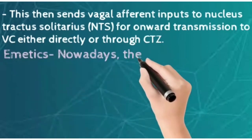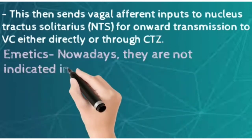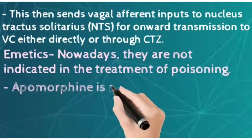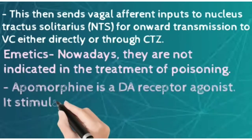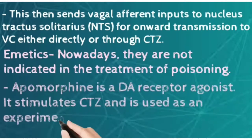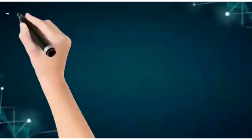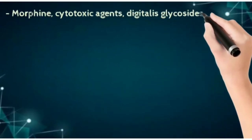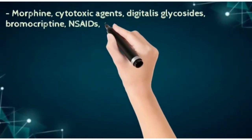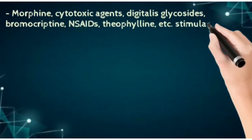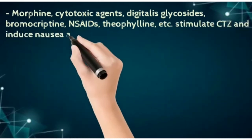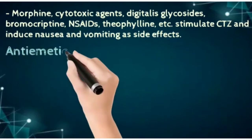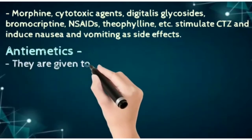These signals send vagal afferent inputs to the nucleus tractus solitarius for onward transmission to the vomiting center either directly or through CTZ. Emetics are nowadays indicated in the treatment of poisoning. Apomorphine is a DA receptor agonist — it is going to stimulate the CTZ and is used as an emetic agent for experiments. Morphine, cytotoxic agents, and NSAIDs all stimulate the CTZ and induce nausea and vomiting as side effects.